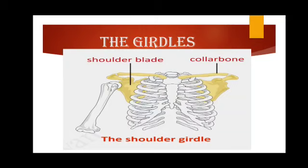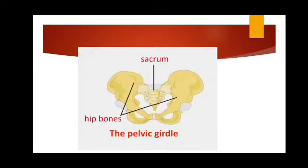Similarly, we have another girdle which is known as the pelvic girdle. This pelvic girdle is a ring of bones that supports the weight of the upper body. It is made up of hip bones which are attached to the sacrum. Now, this sacrum — which you can see labelled here — is not a part of the pelvic girdle; rather it is a part of the backbone. So the pelvic girdle is made up of hip bones attached to the sacrum.